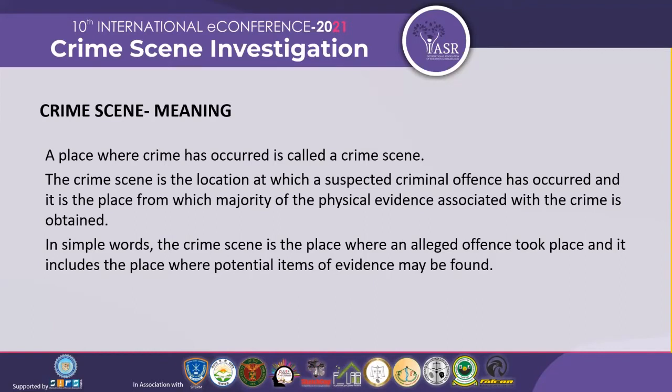What is a crime scene? A crime scene is the location where a suspected criminal offense has occurred. It also includes the place where the majority of physical evidences associated with the crime are obtained. Basically, it is the place where the crime has occurred — this is called the crime scene.